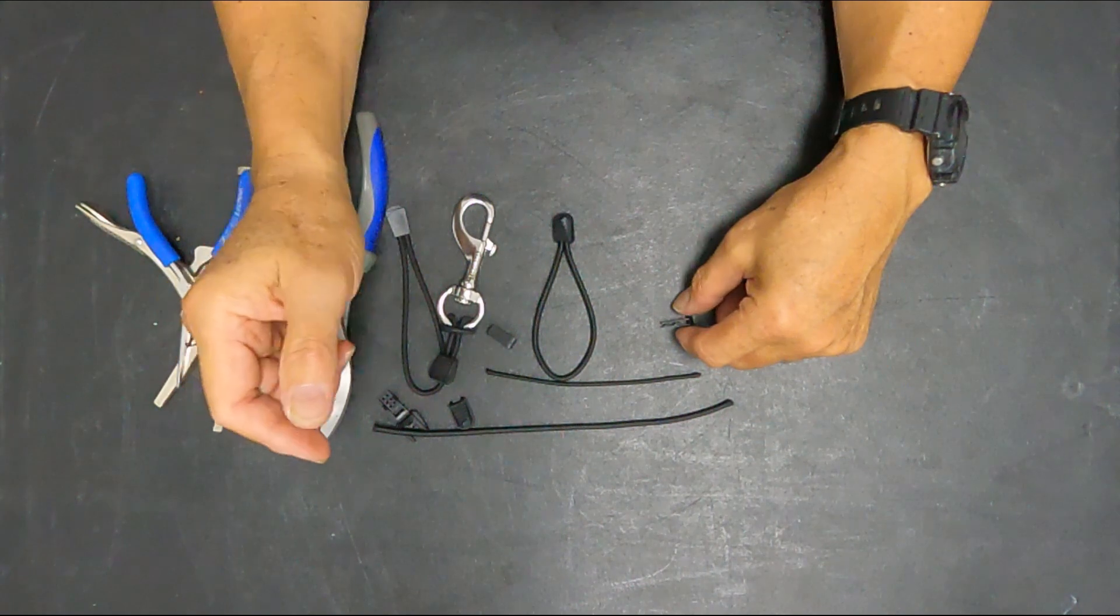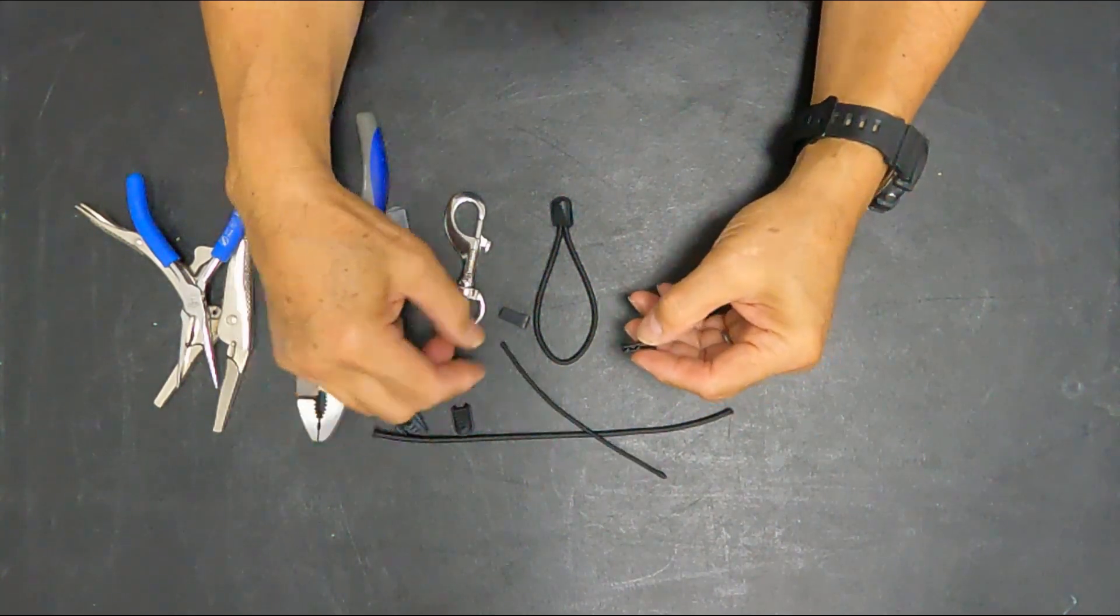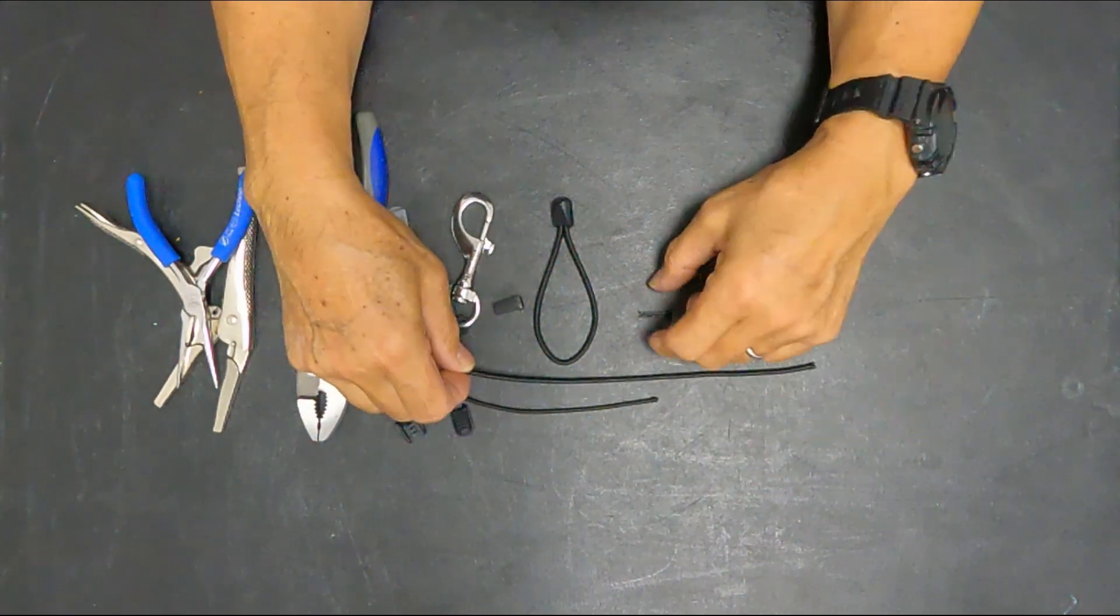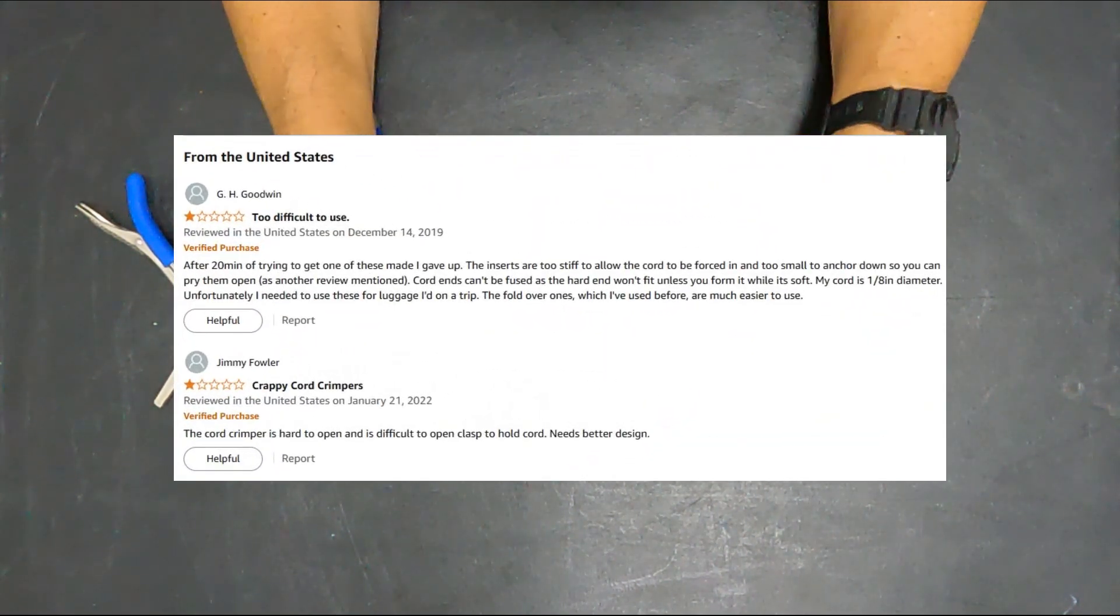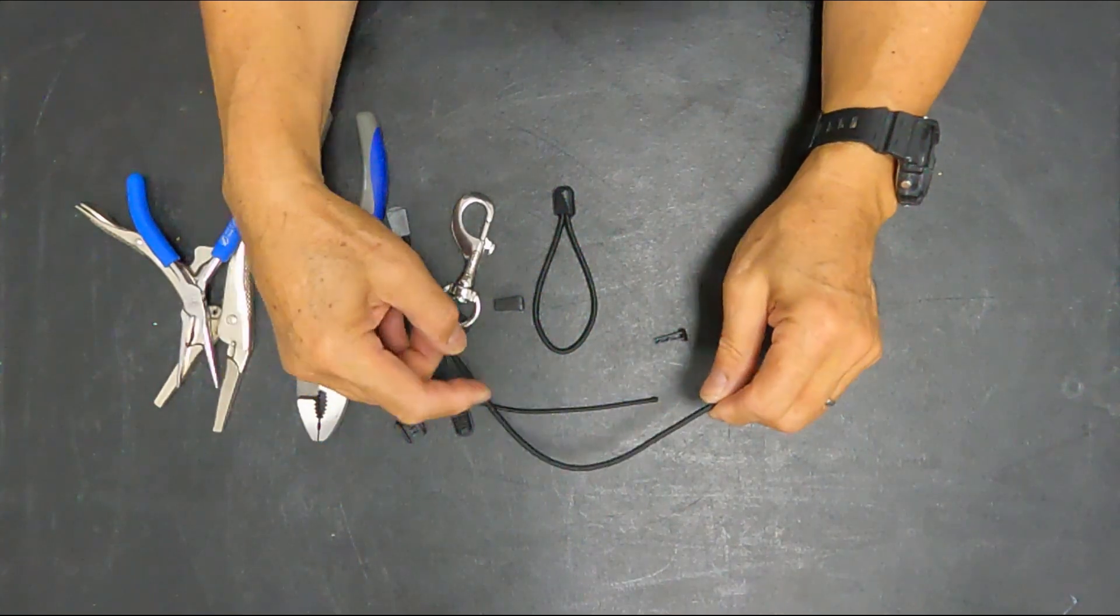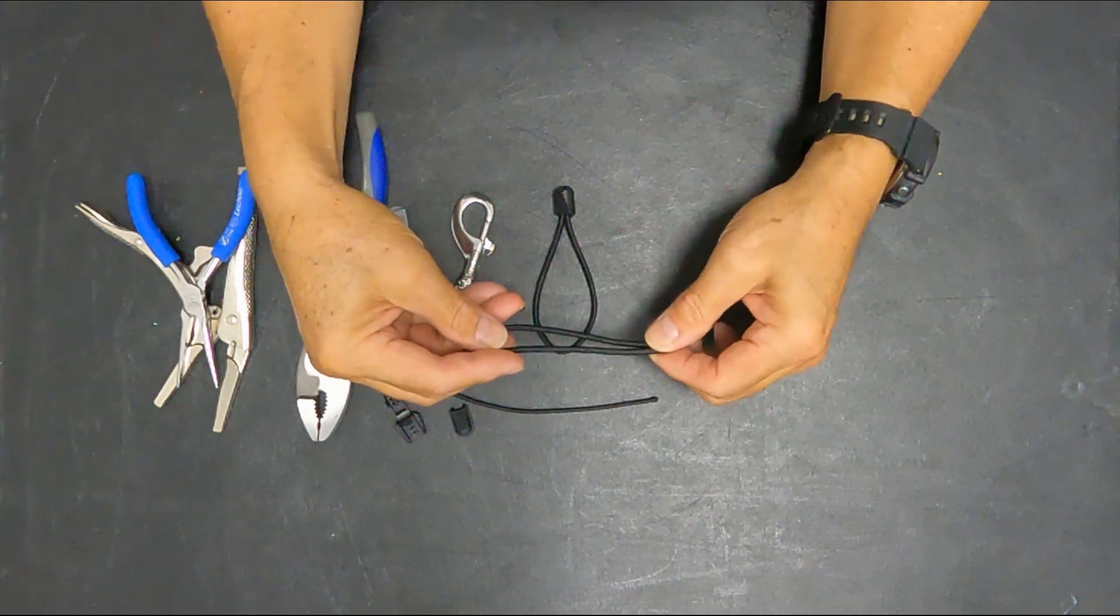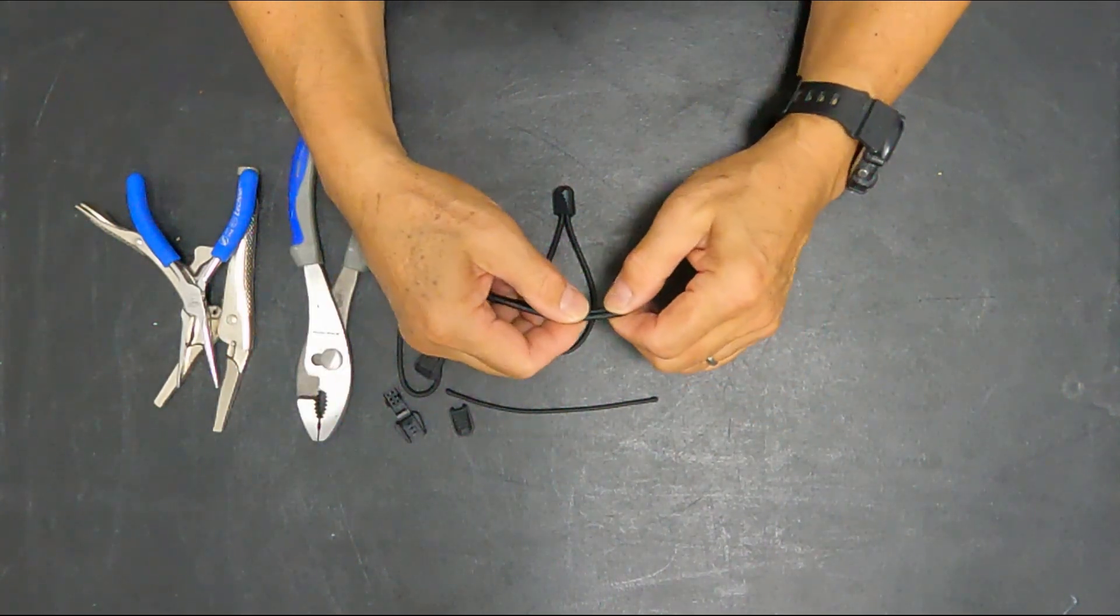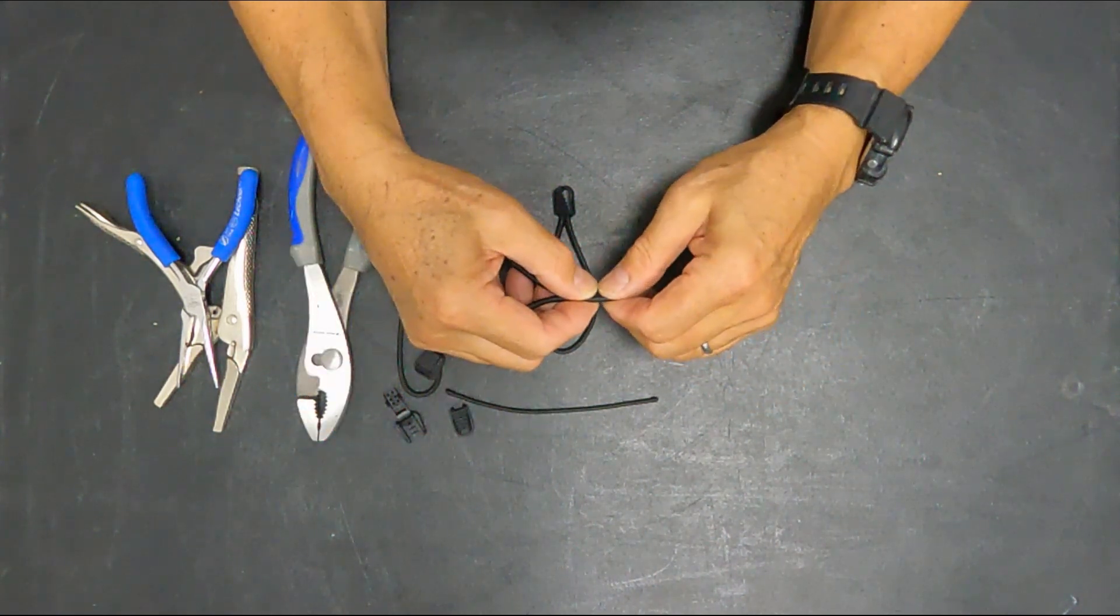What I'm going to do next is I'm going to show you how to use the thicker bungee in one of these things. If you go and you look on the Amazon description for these, what happens is that there are a lot of people that say no, no, no, you can't do that. A lot of times on the internet, when people say you can't do this, or you can't do that, what it means is they couldn't do this, or they couldn't do that.